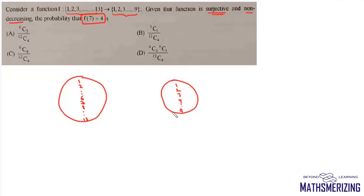First we will find the total number of ways in which this given function can be surjective and non-decreasing. It will be surjective and non-decreasing if 1 is mapped to 1, and it may also be mapped to 2 or 3, but 13 has to be mapped to 9.